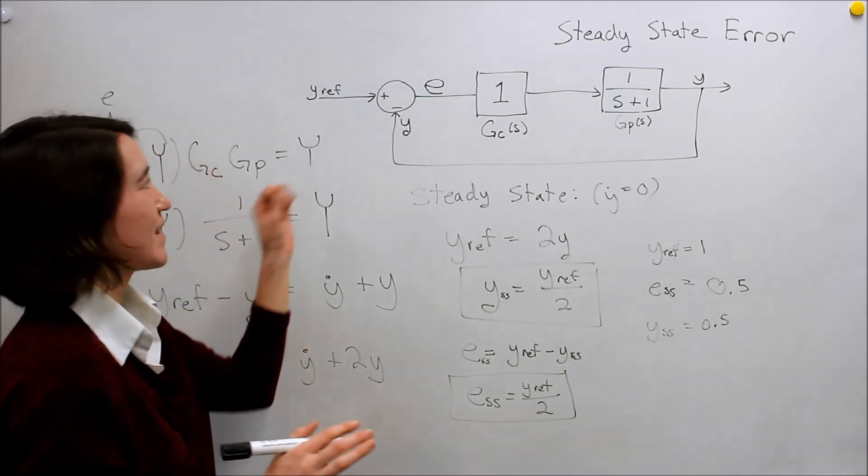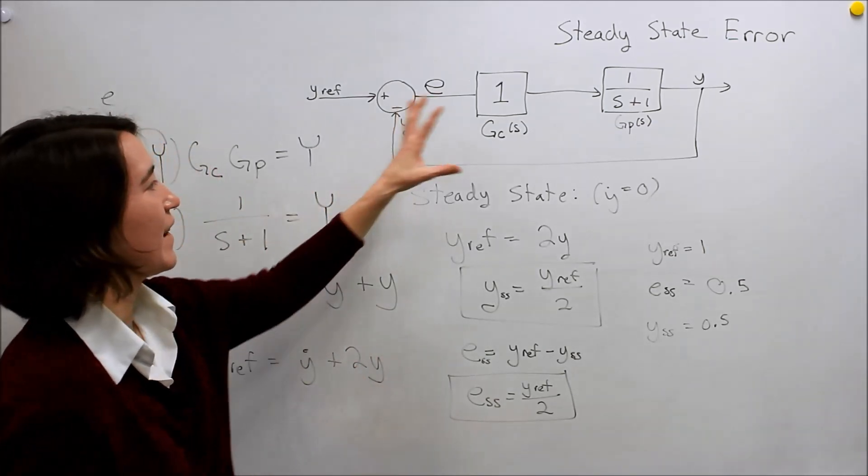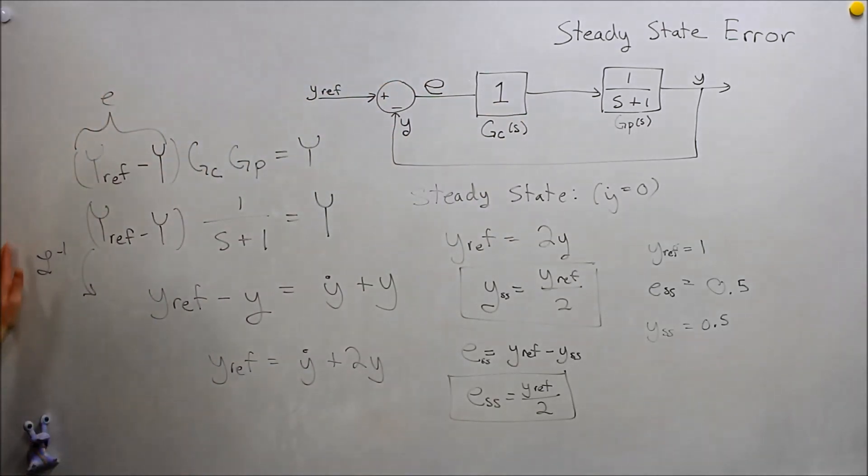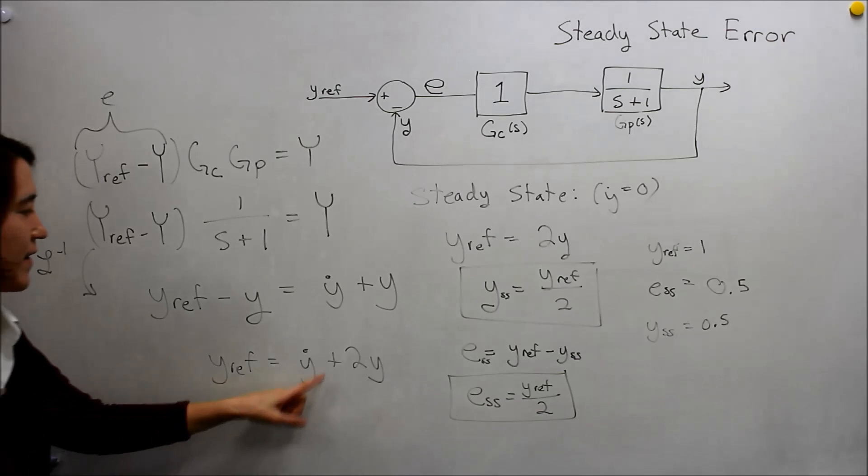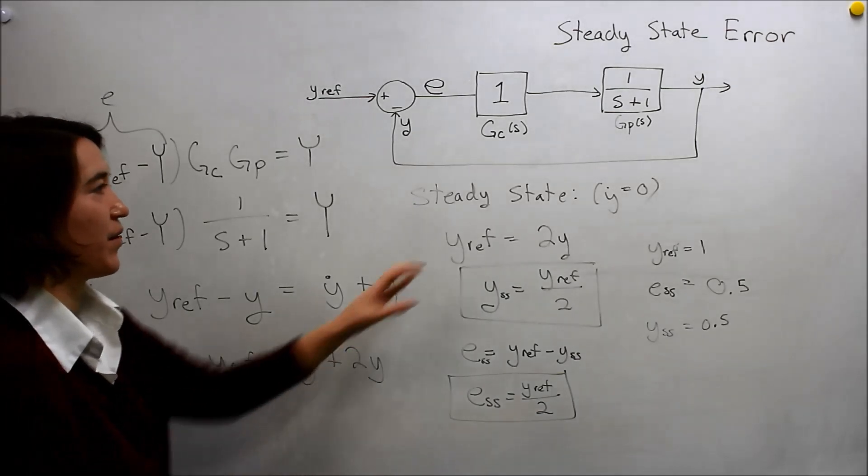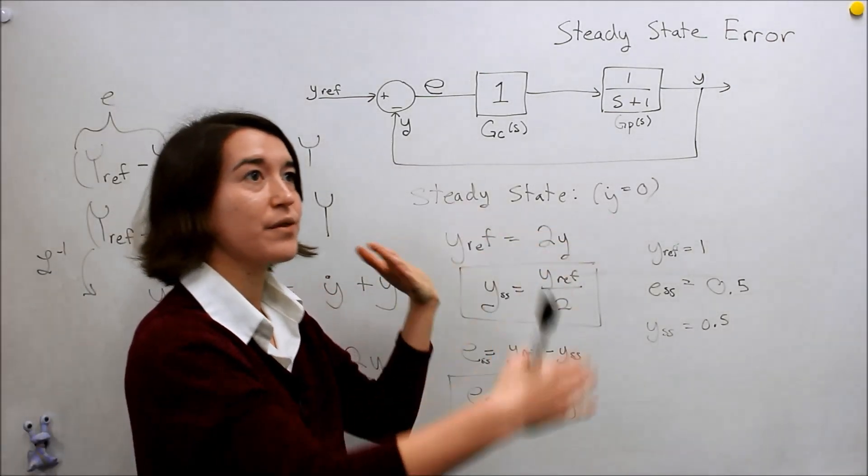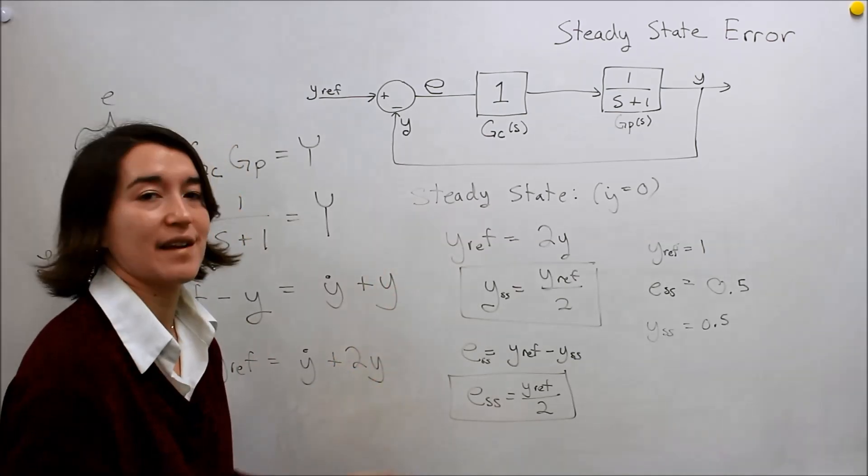If we want to calculate the steady state error, we can bring it back to the time domain. We can do this process to figure out the steady state error. The important part is that you take out this, you make all the dynamics—the higher level, the derivative—all 0, and you can calculate the steady state error.